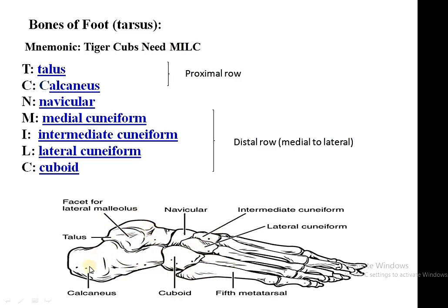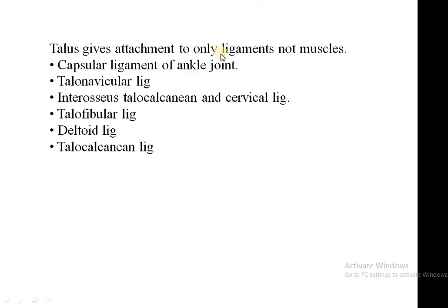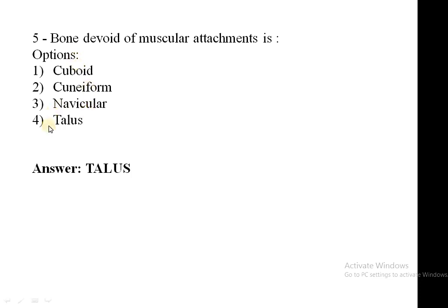These bones are arranged in rows. The proximal row has two bones: talus above and calcaneum below. The distal row has four bones: medial cuneiform, intermediate cuneiform, lateral cuneiform, and cuboid. Between the proximal and distal rows is the navicular bone. According to BD Chaurasia's Anatomy volume 2, the talus gives attachment to ligaments but does not give any attachment to muscles — it is devoid of all muscular attachments. The ligaments attached include the capsular ligament of the ankle joint, talonavicular joint, interosseous talocalcaneal and cervical ligament, talofibular ligament, deltoid ligament, and talocalcaneal ligament.